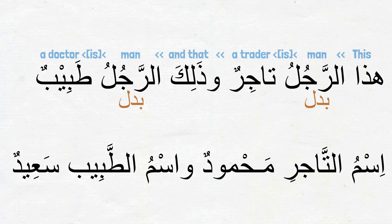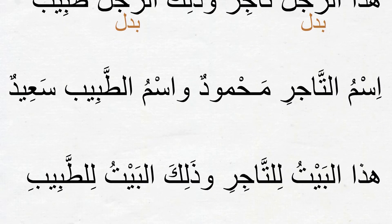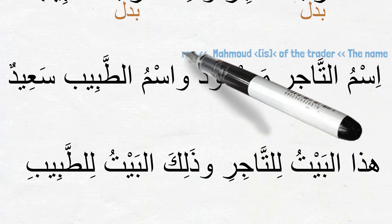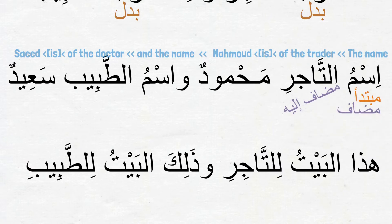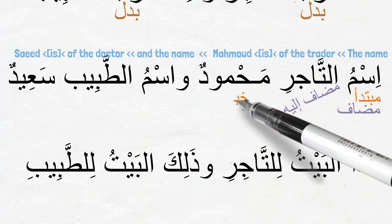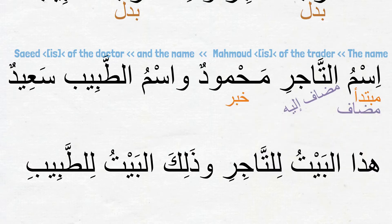Next: اسم التاجر محمود واسم الطبيب سعيد — The name of the trader is Mahmoud and the name of the doctor is Sa'eed. Can you find badal in these two sentences? There is actually no badal here. اسم is the مبتدأ وهو مضاف, and التاجر is مضاف إليه, and محمود is the khabar of the first sentence. The structure of the second sentence is the same as the first.